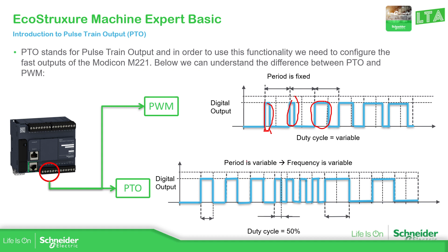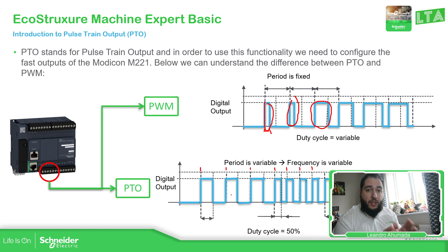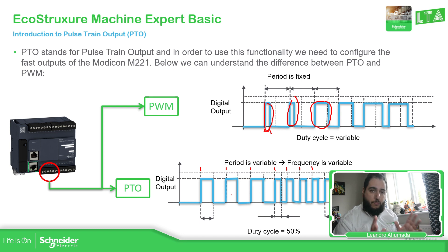What PTO changes is the frequency of those pulses. If we change the frequency, it also changes the period. The duty cycle in all of them is 50%. So the difference from PWM is that in PWM we have a fixed period and fixed frequency, and the only thing we modify is the duty cycle. On the PTO, the duty cycle is fixed at 50%, and what we can change is the frequency of the pulses going from the controller to the device we want to control.